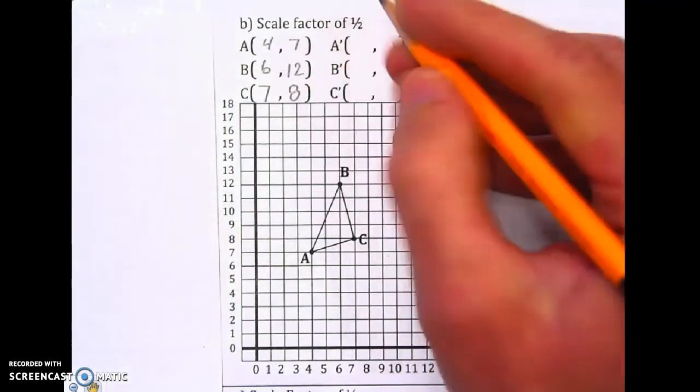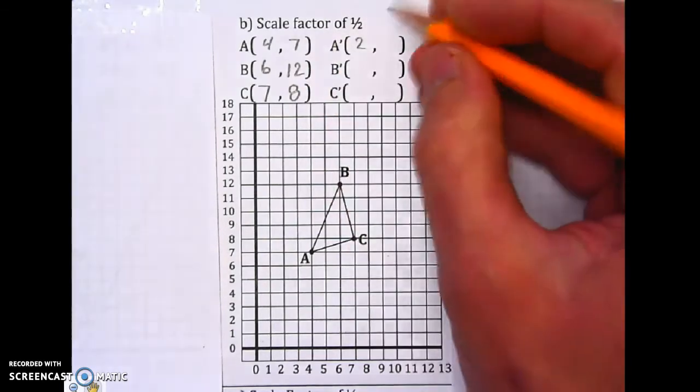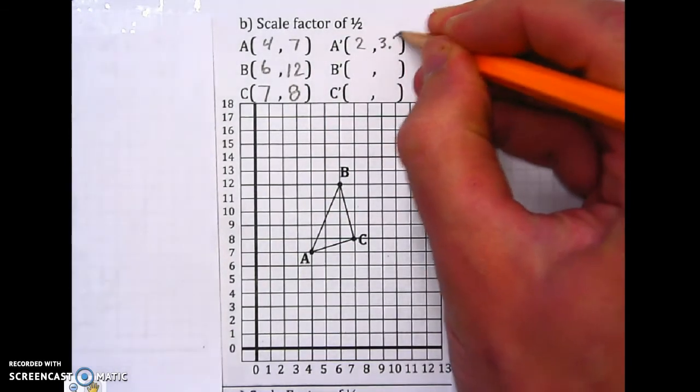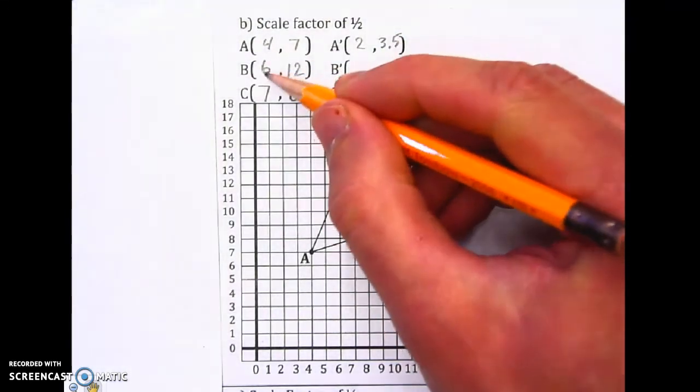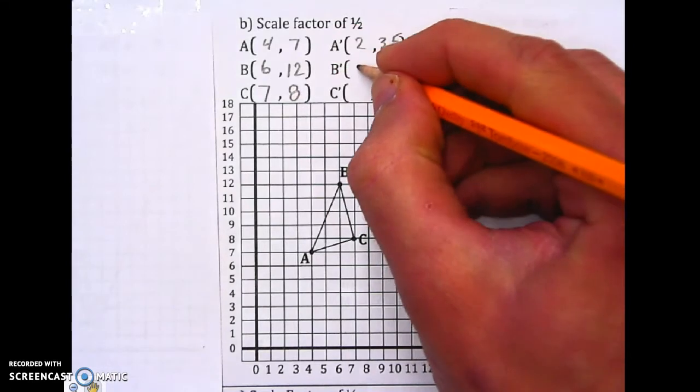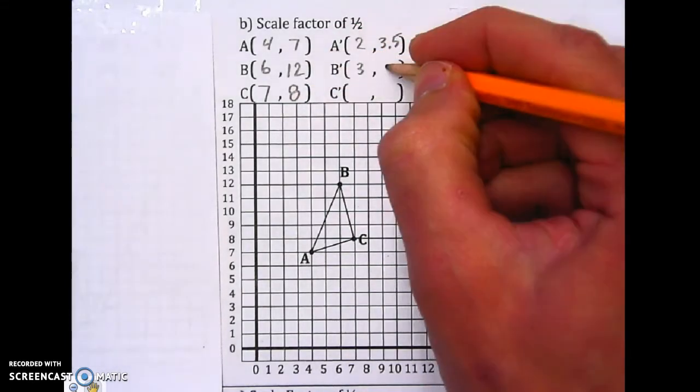So half of 4, 4 divided by 2, that's 2. Dividing 7 in half, we get a decimal, 3.5. It's okay to get a decimal. And then for B, dividing 6 in half, we get 3. Dividing 12 in half, I get 6.